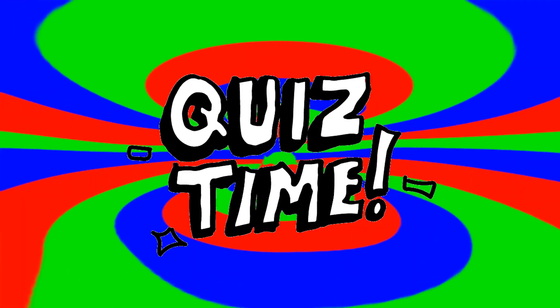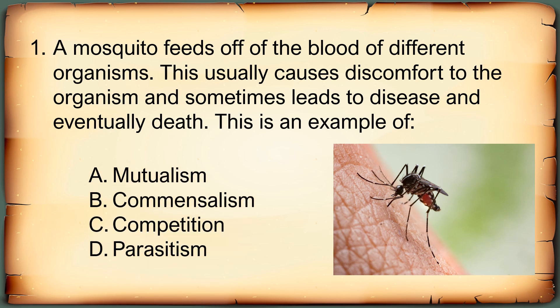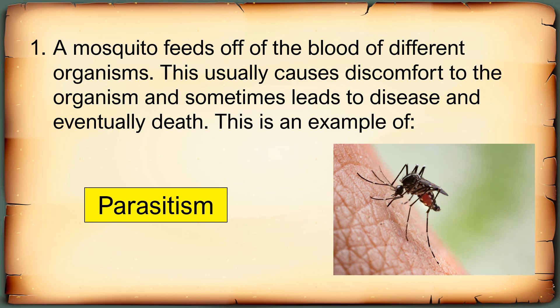To check if you have learned something from this video lesson, let's have a short quiz. First question: A mosquito feeds off of the blood of different organisms. This usually causes discomfort to the organism and sometimes leads to disease and eventually death. This is an example of A. Mutualism, B. Commensalism, C. Competition, or D. Parasitism. You have five seconds. The correct answer is Parasitism.